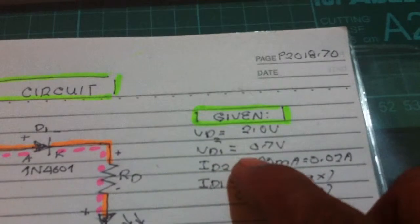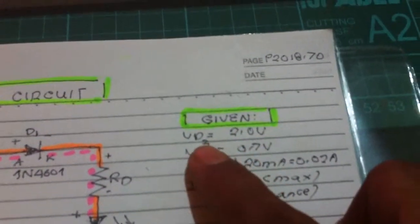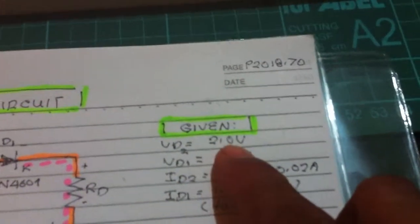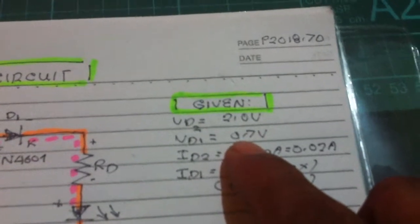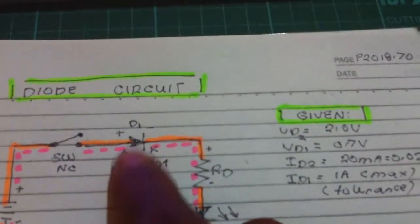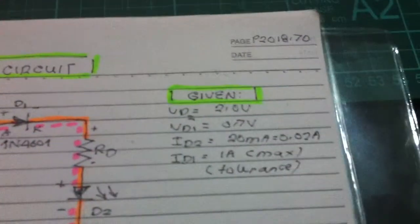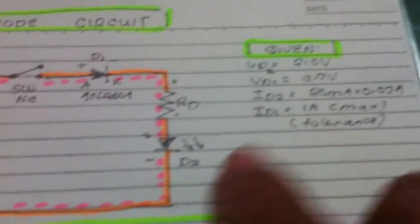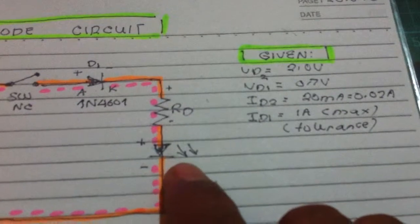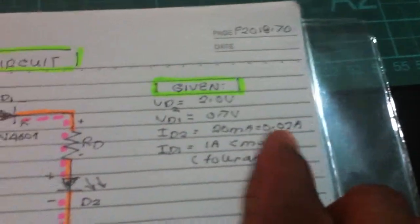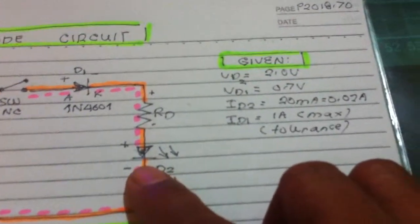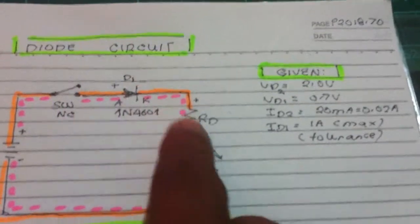There are two types of voltage here: the 2.0 volts is the voltage drop across the LED needed to turn it on, and 0.7 volts is the voltage needed to turn on the 1N4001 diode. The current for D2 needed to turn on the LED is 20 milliamperes or 0.02 amperes. Since the components are in series, all currents are equal.